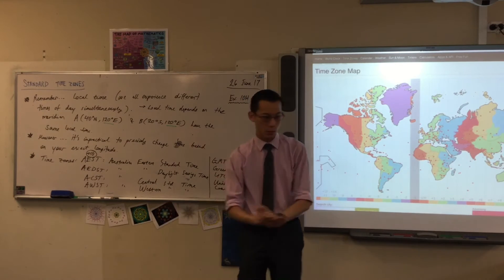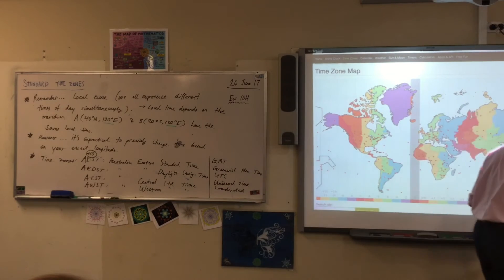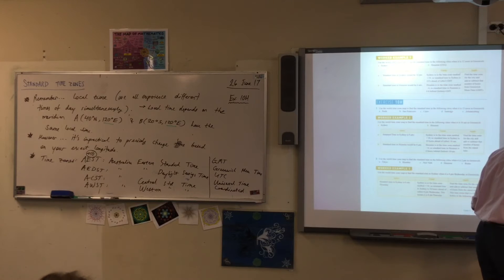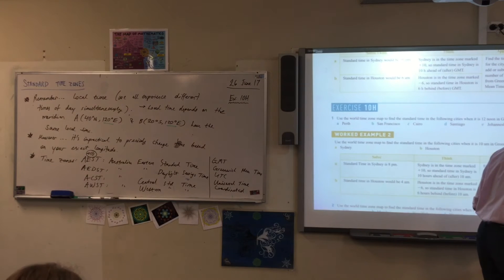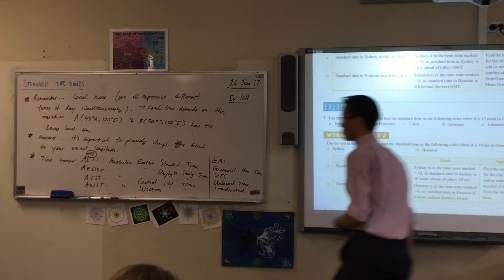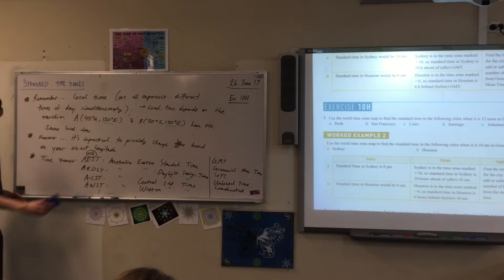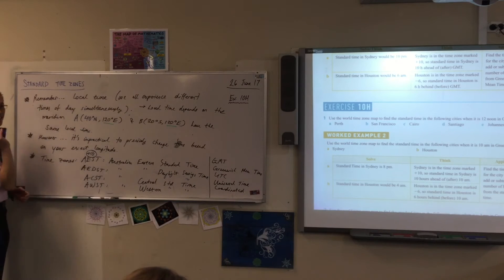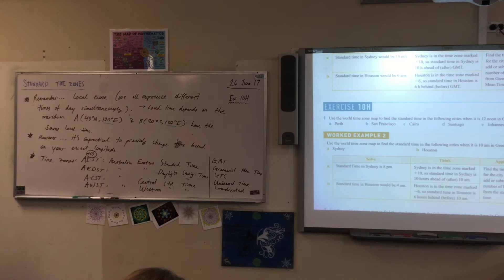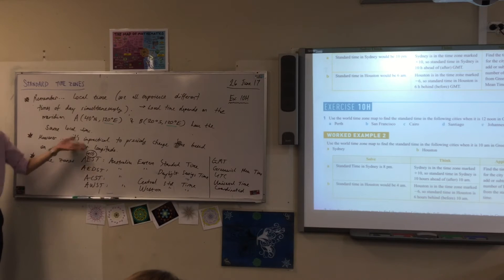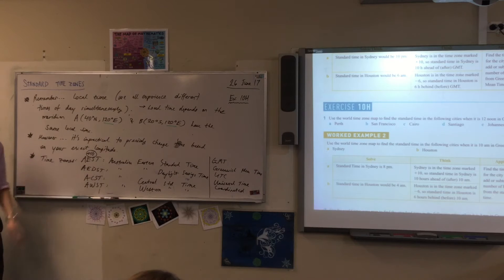If you haven't already, open up your textbook. Let's look at 10H and have a go at the questions. What does it say? Change time based on your exact longitude? So we don't do that, because it's crazy — it's like I've gone a little bit and then my watch has to go back four degrees.